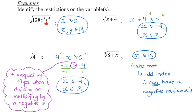Anytime we see variables in the radicand, we have to ask: what are the restrictions on those variables? Sometimes directions will say 'state the values for which this expression is defined' — that means the same thing. Key things to check: Is it an odd index or an even index? Are we adding or subtracting — in which case, set the radicand greater than or equal to zero and isolate the variable. If we're multiplying, examine each piece and determine what restrictions ensure the entire radicand is positive or zero.